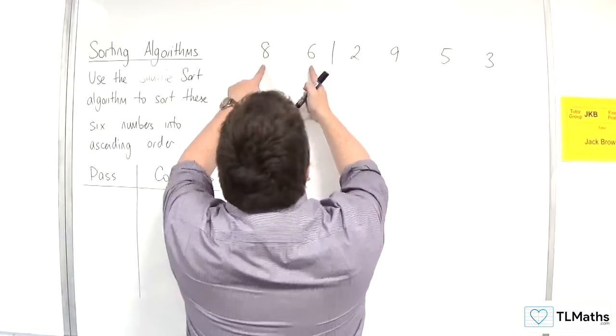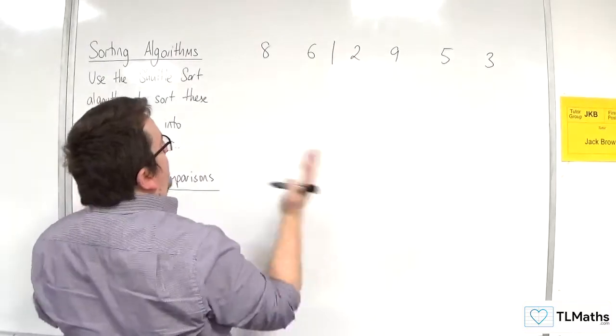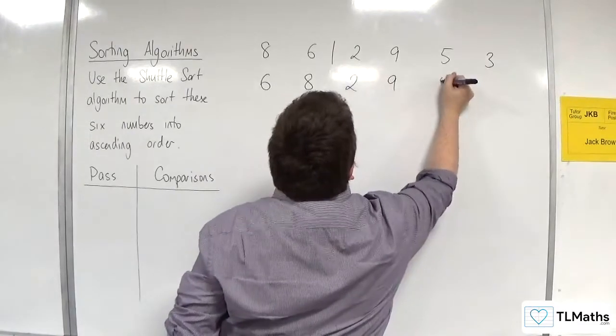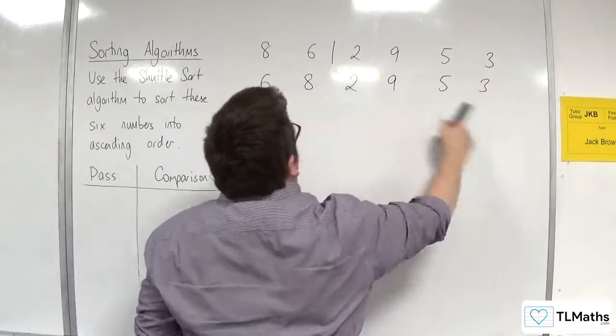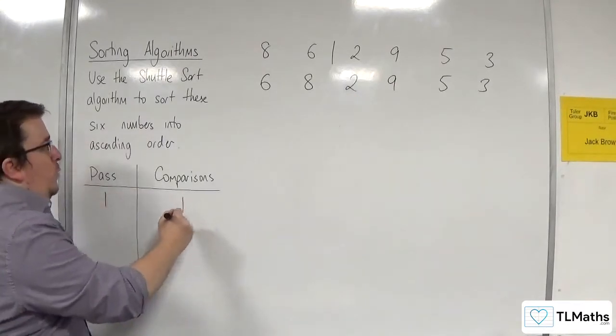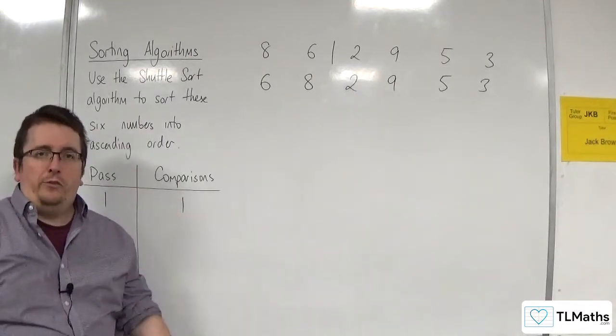First of all, eight and six, they're not in ascending order, so they need to be swapped. So it would be six, eight, and then we've got the two, nine, five, three. They remain where they are. In the first pass, we make one comparison and we've made one swap.